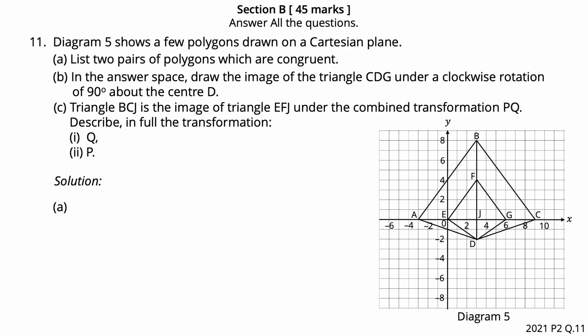Question number 11. Diagram 5 shows a few polygons drawn on a Cartesian plane. Question A. List two pairs of polygons which are congruent. Two triangles are said to be congruent if pairs of their corresponding sides and their corresponding angles are equal. They are of the same shape and size. From the diagram, triangle DEF is congruent to triangle DGF. Triangle DAB is congruent to triangle DCB.